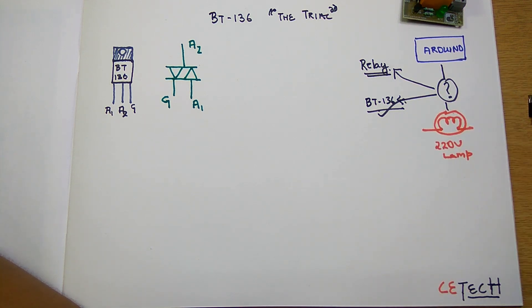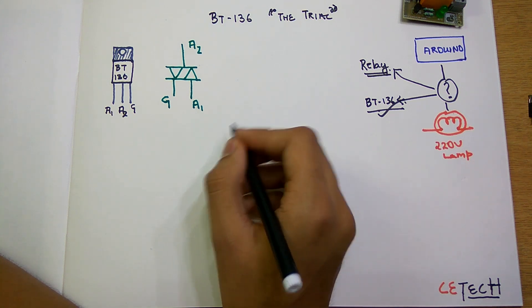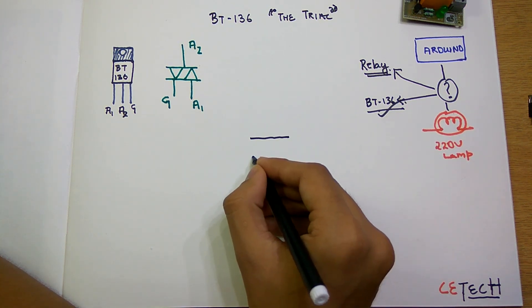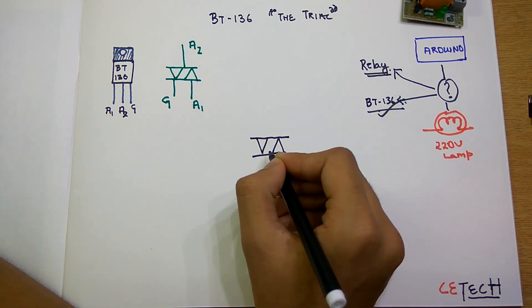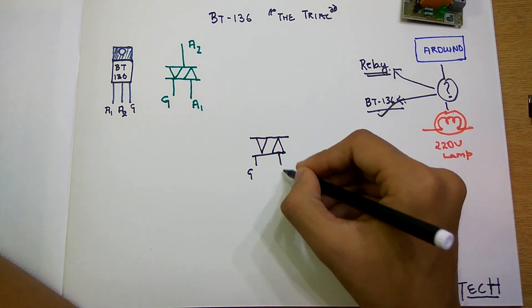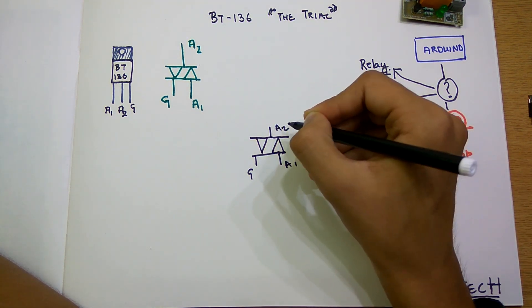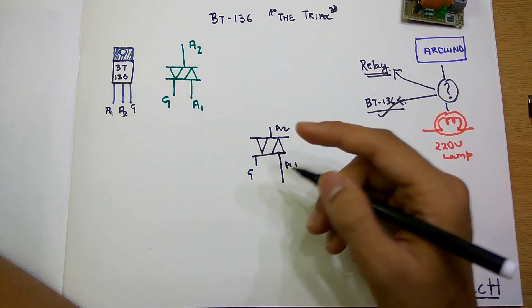So in a circuit, say we have to control a lamp using this. This is the gate, this is the A1, and this is the A2.